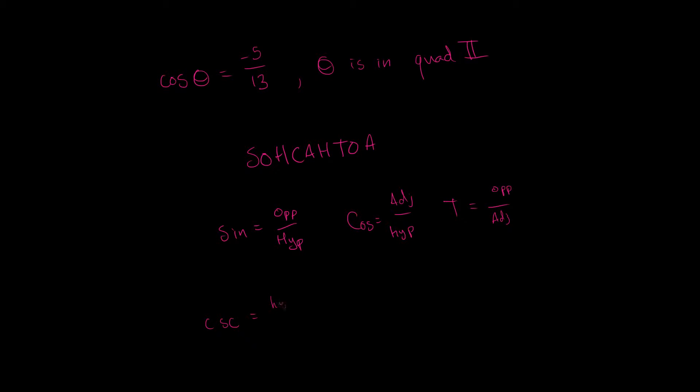We have secant, which is hypotenuse over adjacent, and then we have cotangent, which is adjacent over opposite.